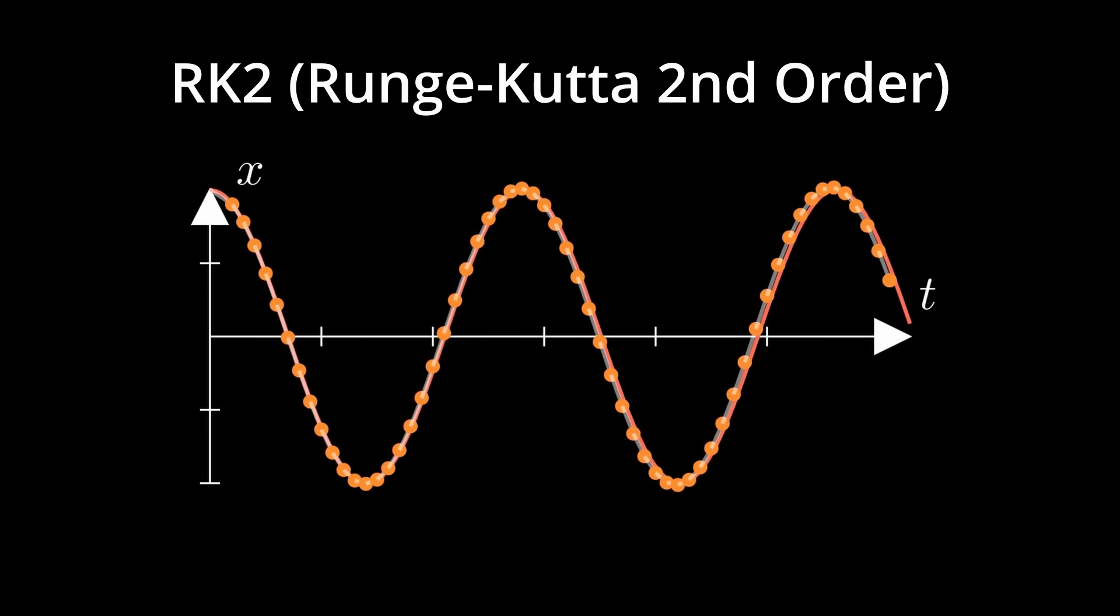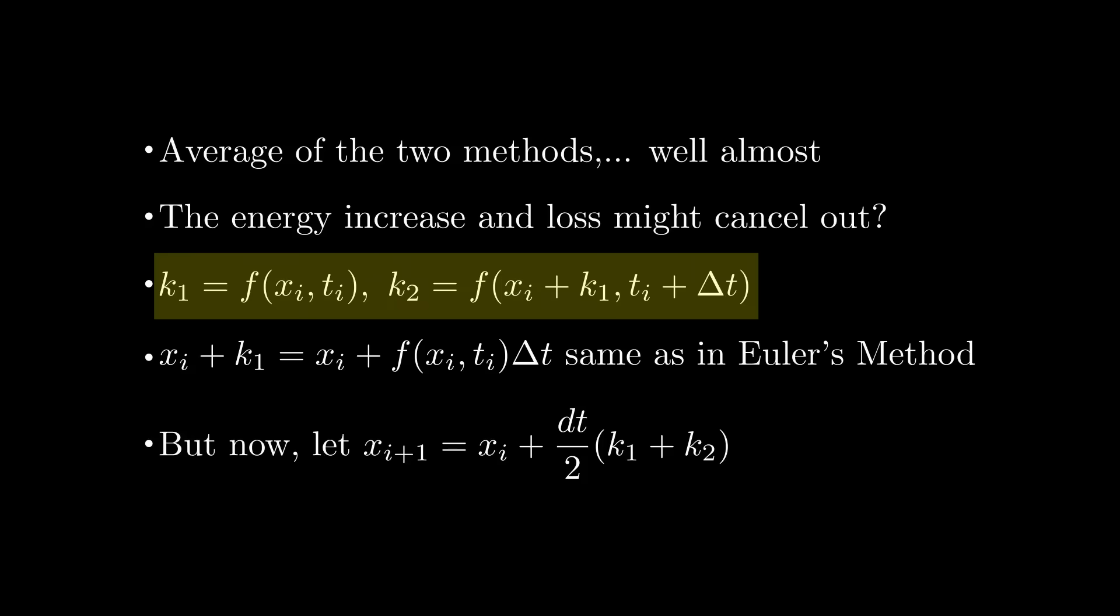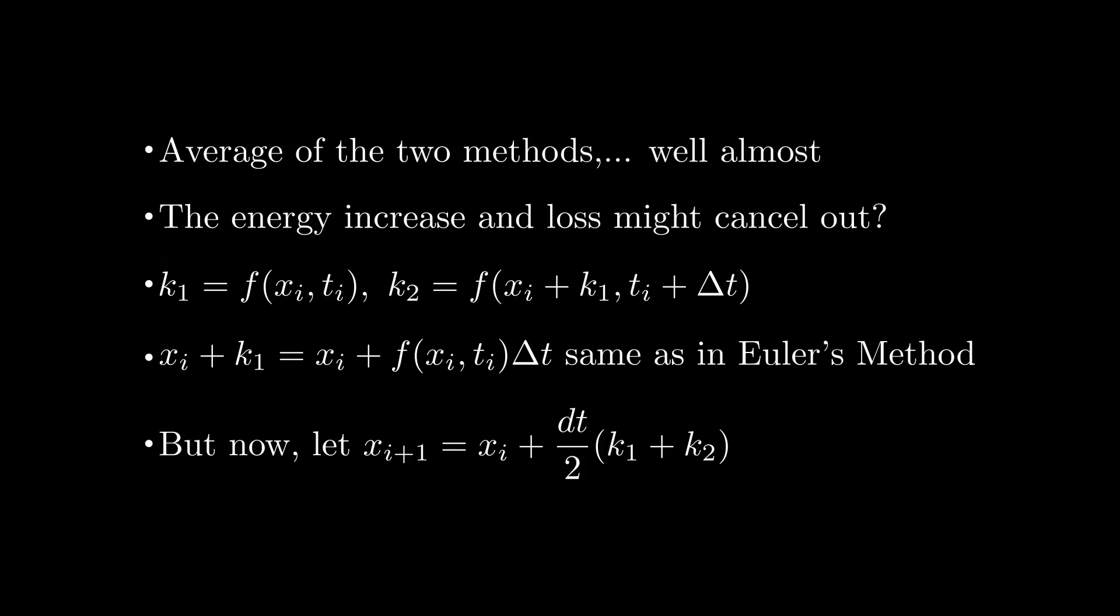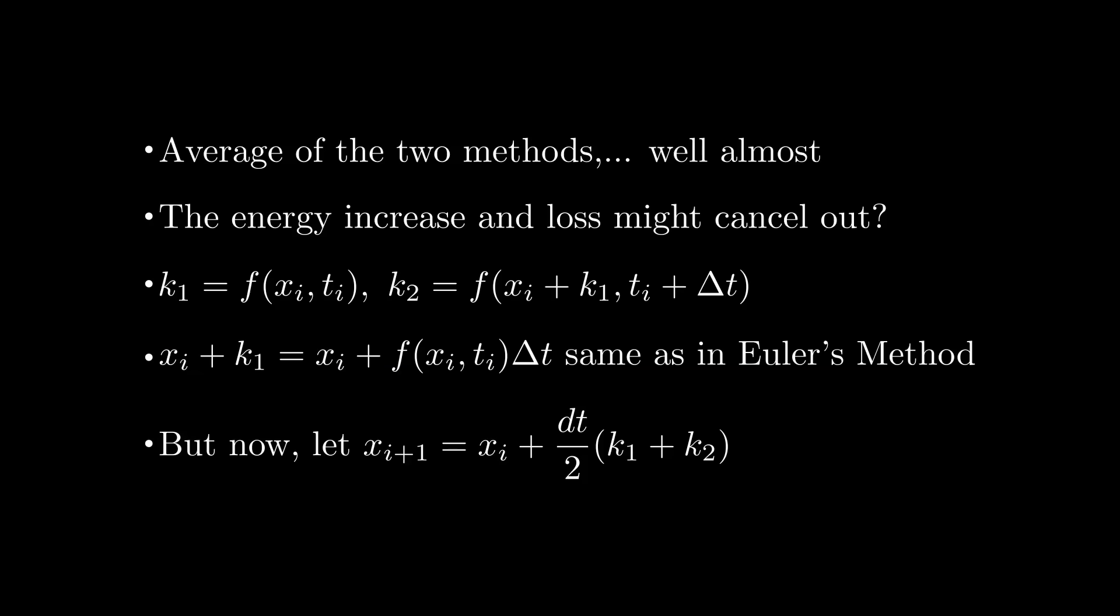Runge-Kutta is a family of differential equation approximation methods that follow in a similar line of reasoning. This particular method I've shown is second order because there are two terms, k₁ and k₂, that we average over. In fact, the explicit Euler's method is equivalent to a Runge-Kutta first order method. This is why x plus f(xᵢ, tᵢ)Δt showed up in our calculations for RK2. It's also good to note that just like Euler's method, Runge-Kutta methods can be both explicit or implicit.